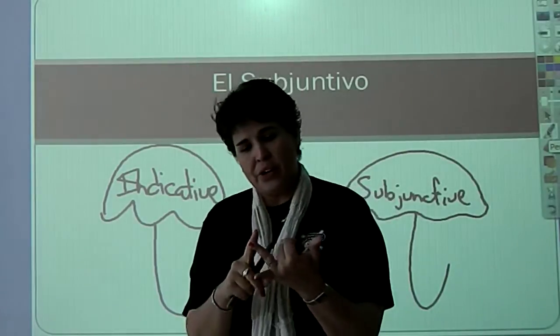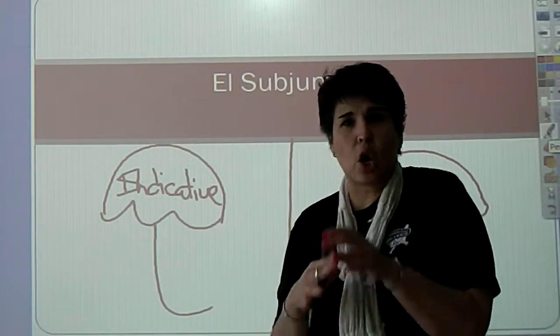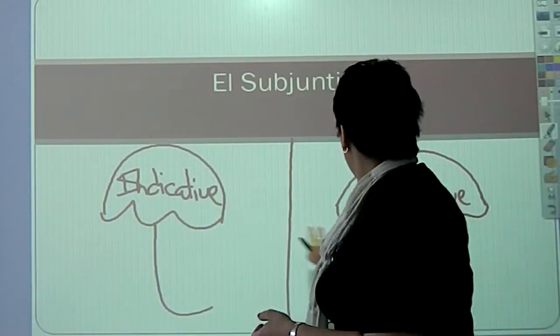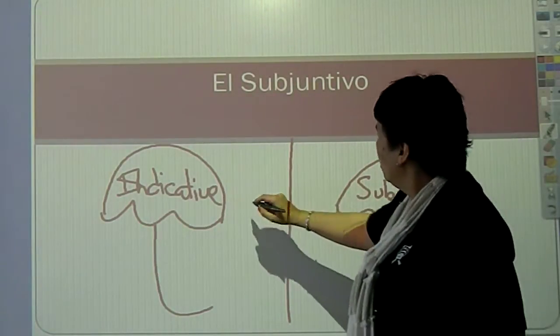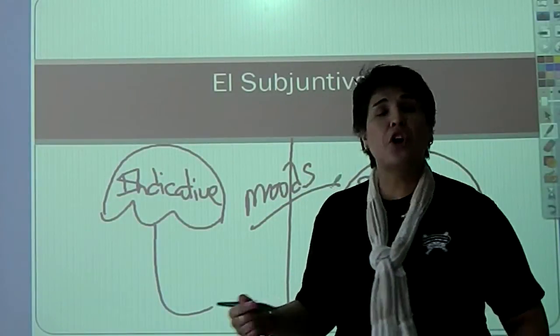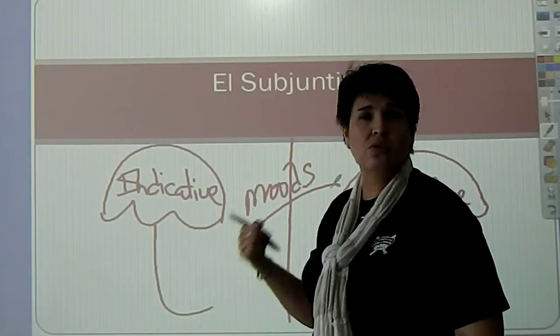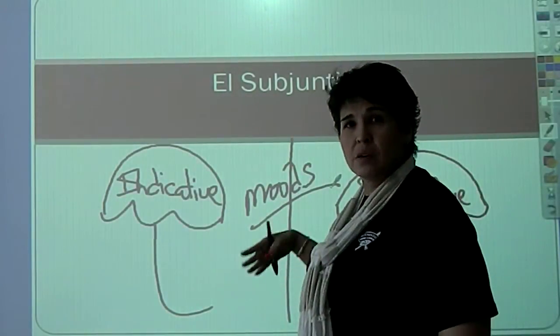Present, preterite, imperfect, future, perfect, progressives, all of those guys, those are tenses. These guys are called moods. Moods. You've never heard of moods because English doesn't use moods. But Spanish has moods.